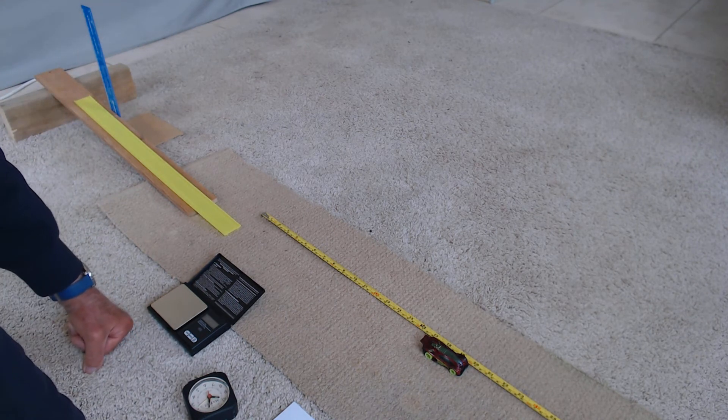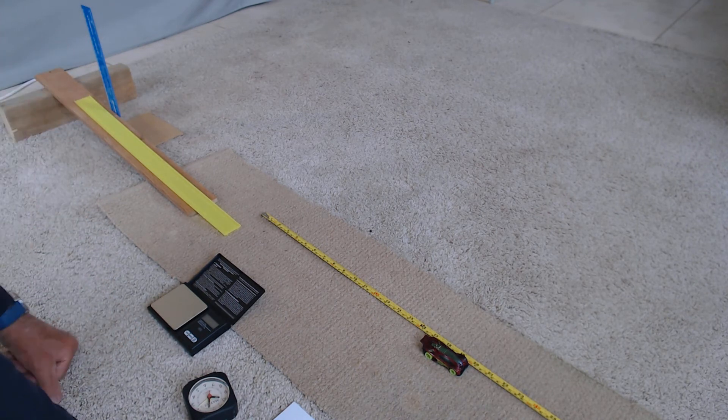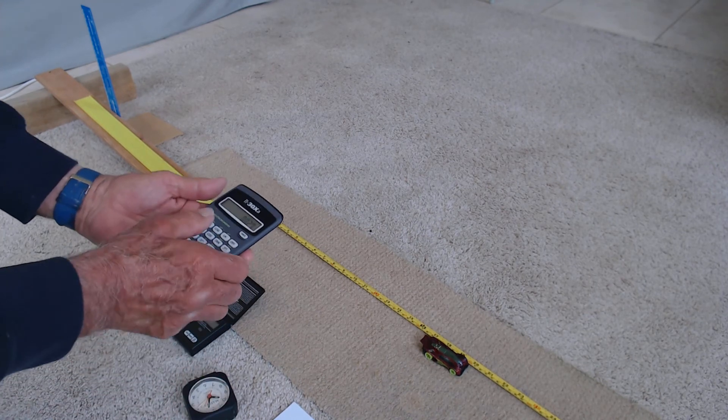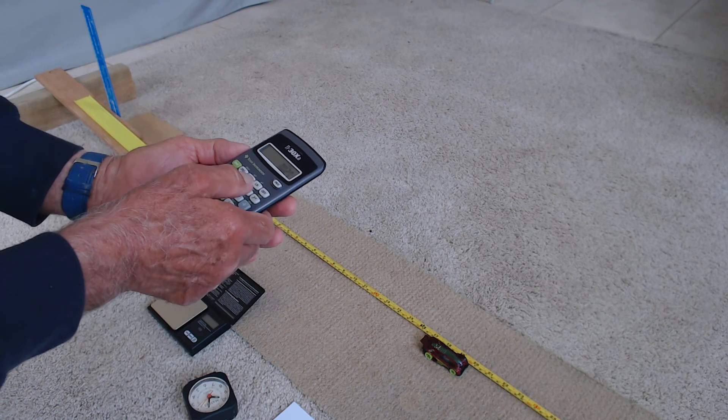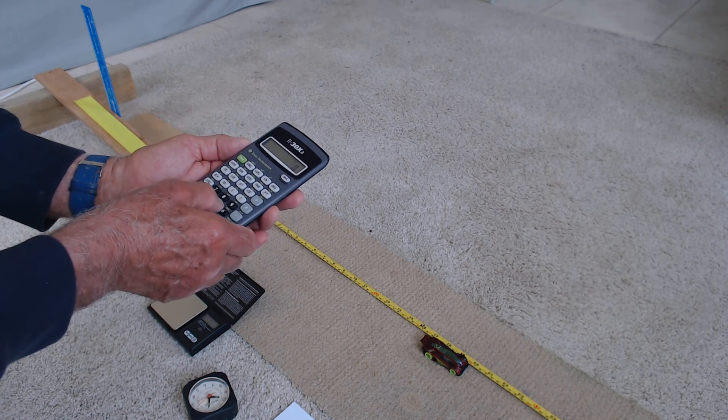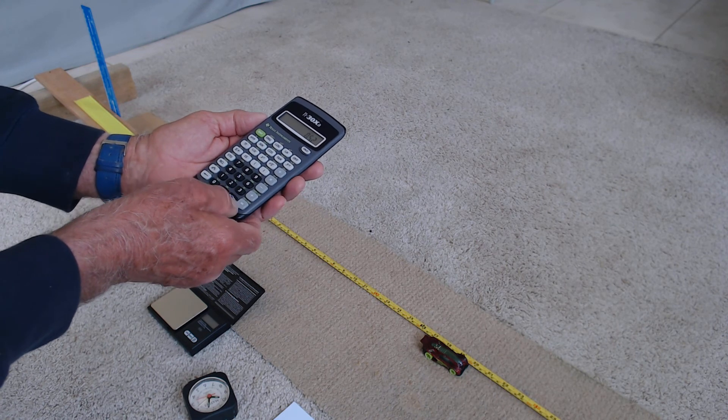Well, I think if we call the distance 52 centimeters, 0.52 of a meter. So if we now divide the 0.027 by 0.52 of a meter,